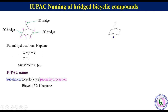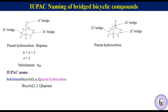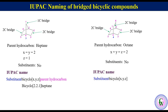Compound 4. Both bridgeheads are of the same type; label any one as number 1. There are three bridges with two carbons each, so we can follow any path for numbering: 2, 3, 4, 5, 6, 7, and 8. There are eight carbon atoms, so the parent hydrocarbon is octane. X = Y = Z = 2. There is no substituent. The IUPAC name is Bicyclo[2.2.2]octane.